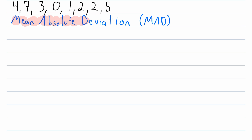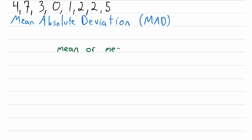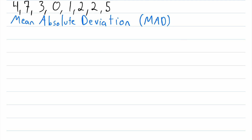So what is mean absolute deviation, and why would we be interested in finding such a thing? The mean absolute deviation of a set of data basically tells us how much variation there is in the data — it tells us, on average, how much the values in the data set deviate from the average. In order to figure out how much the data points deviate from the average, we need to find the average. We could calculate it as the mean, median, or mode. The mean is the most commonly used, and that's what we're going to use in this video — that's why mean absolute deviation is in the title.